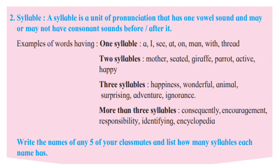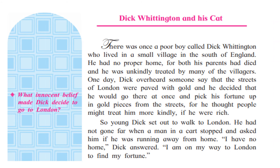Now what you have to do with this activity: write the name of any five of your classmates and list how many syllables each name has. For example, Om — one syllable. Like that you have to make the list of your friends and find out how many syllables are in his or her name. Now let us see the story.